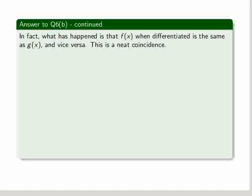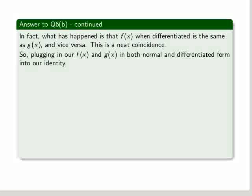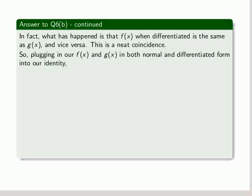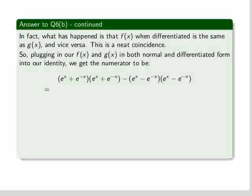That means that we get differentiating f with respect to x, and then we differentiate g with respect to x. In fact, what has happened is that f of x when differentiated is the same as g of x and vice versa. This is a neat coincidence. So plugging in our f of x and g of x in the normal and differentiated form into our identity, we get that on the numerator.